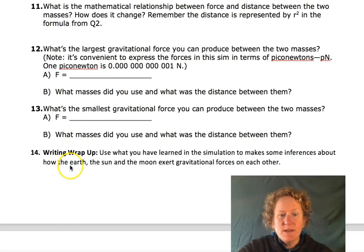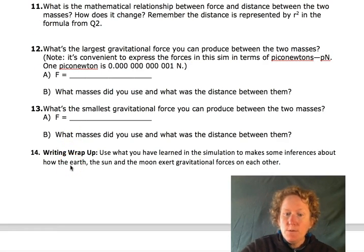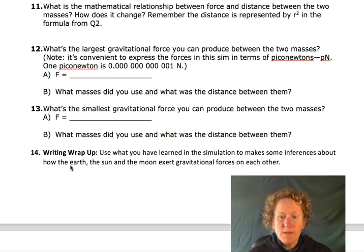Okay, number 14, a little bit of writing wrap-up. Use what you've learned in the simulation, and using that formula for the force of gravity, to make some inferences about how the Earth, the Sun, and the Moon exert gravitational forces on each other. And if you're having a hard time making inferences, you can go look things up online. Just make sure you cite your sources and don't copy and paste, because I will know.